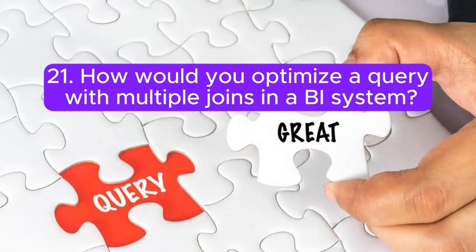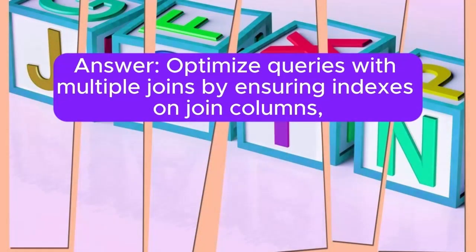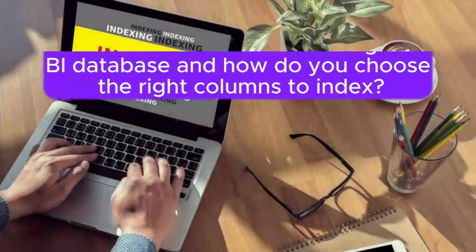Question 21: How would you optimize a query with multiple joins in a BI system? Answer: Optimize queries with multiple joins by ensuring indexes on join columns, using appropriate join types, and considering denormalization or materialized views for complex queries.